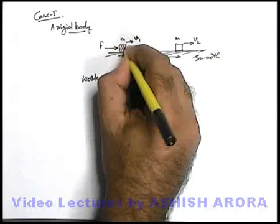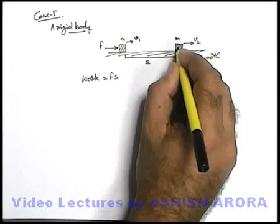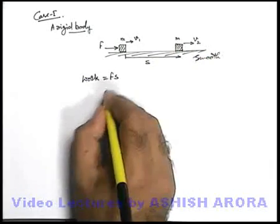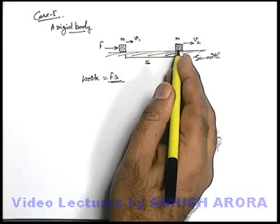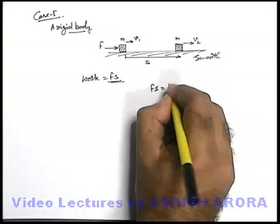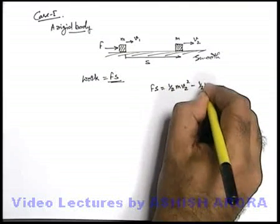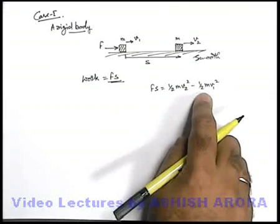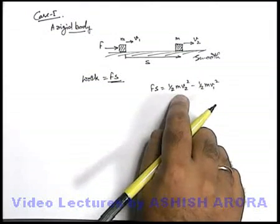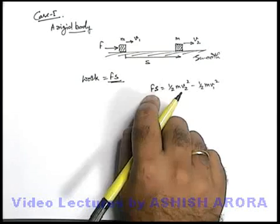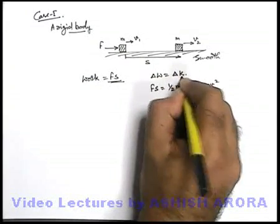Because if this block is a rigid body, no potential energy will be stored in the body through its elasticity. So we can say this work is used in increasing the kinetic energy of the block. We can simply write F·s = ½mv₂² − ½mv₁². This was the initial kinetic energy and this was the final kinetic energy, so whatever increase takes place is because of the work done. So we can also write: work done = change in kinetic energy of the body.